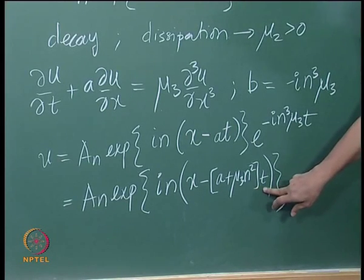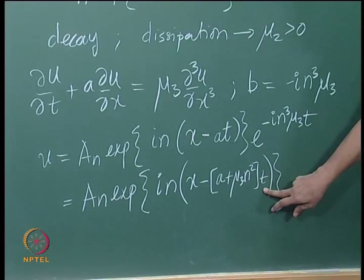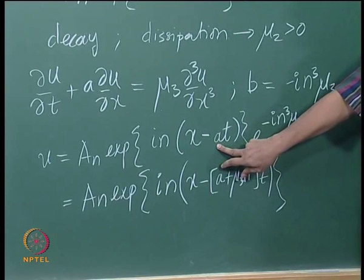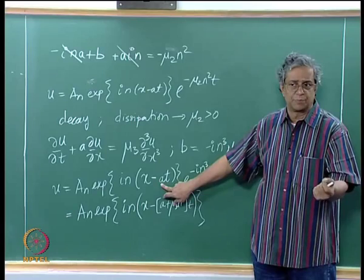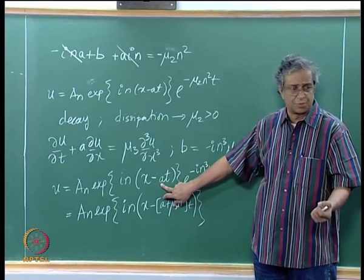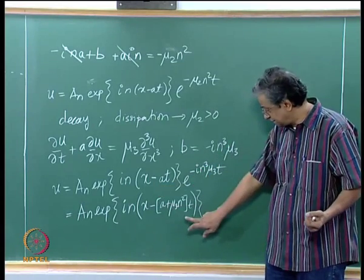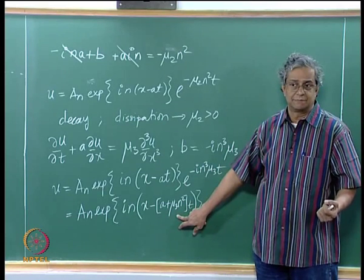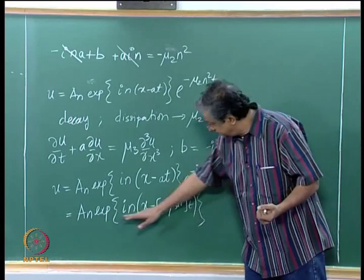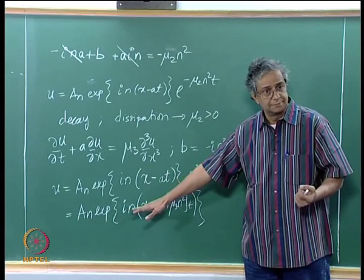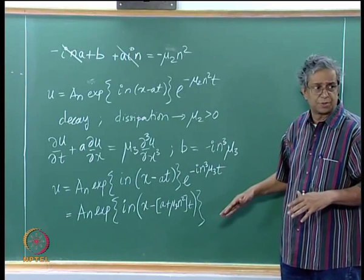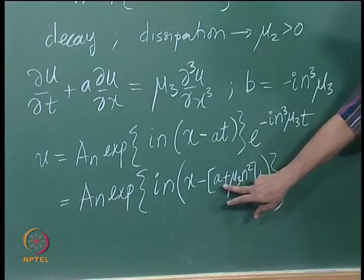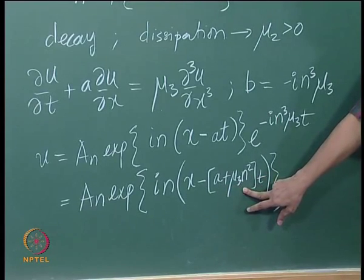The coefficient multiplying t was the physical speed with which our equation was propagating the signal. That speed has now changed. The addition of the third derivative term gives a purely complex term — there is no real component. It is not going to decay; it is going to keep on oscillating.